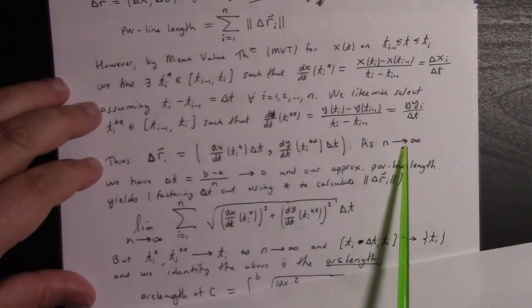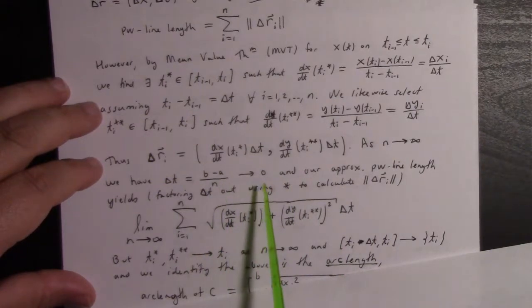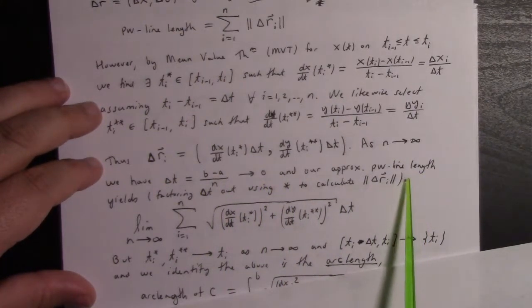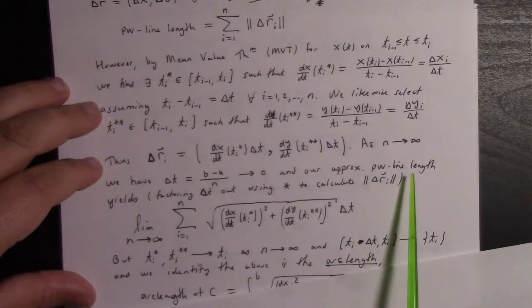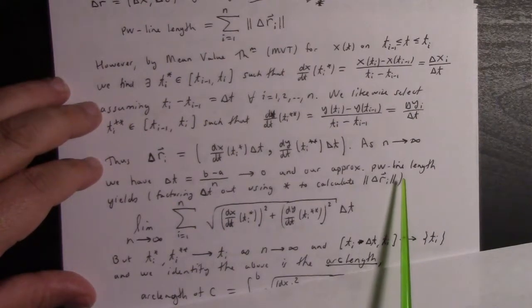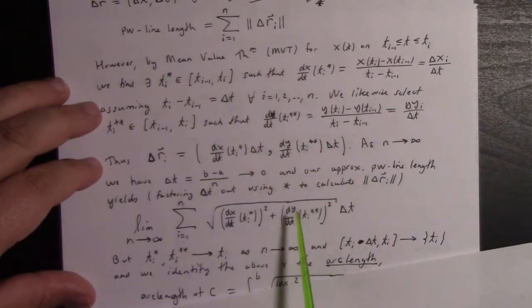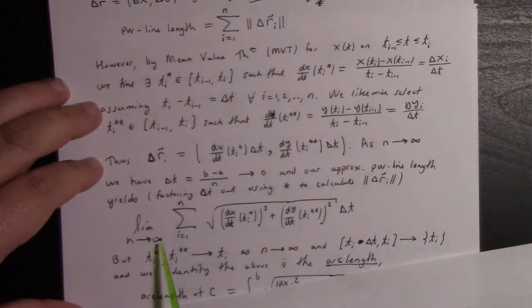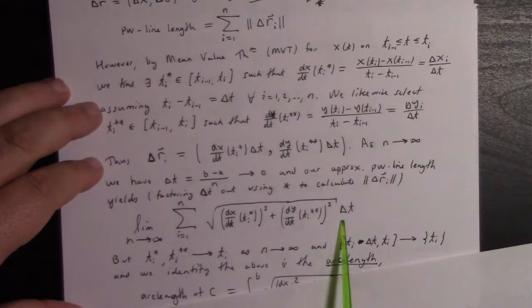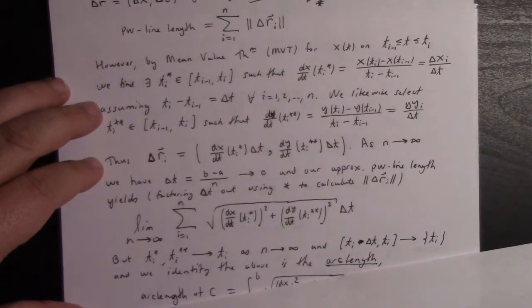This tells me that the i-th displacement vector can be written as the instantaneous rate of change for x and y at the appropriate sample points times Δt. Now, as N goes to infinity, we have Δt going to zero.